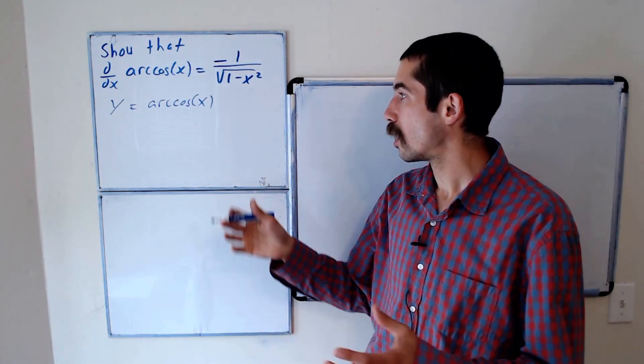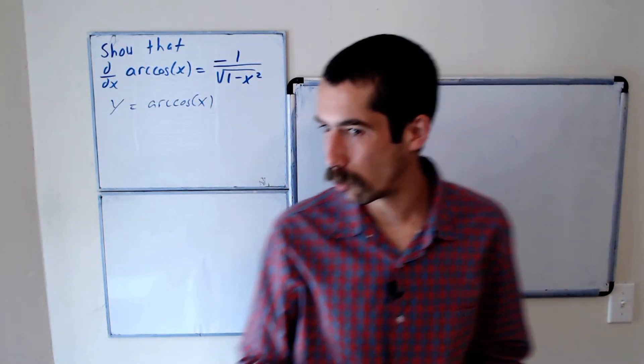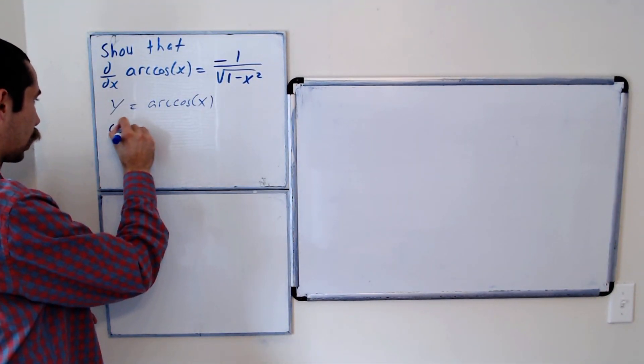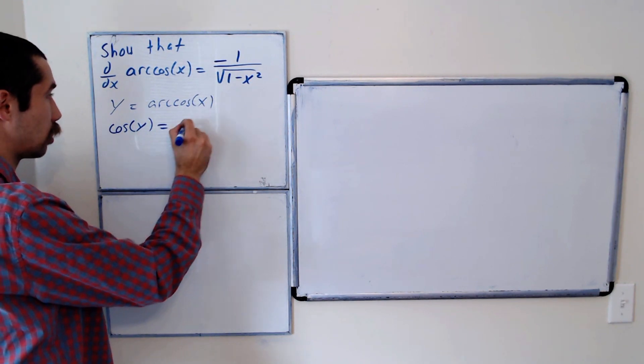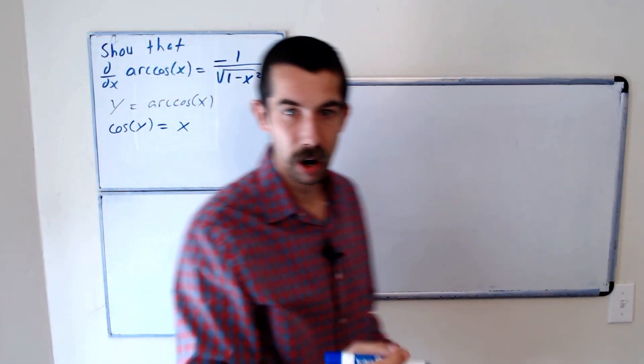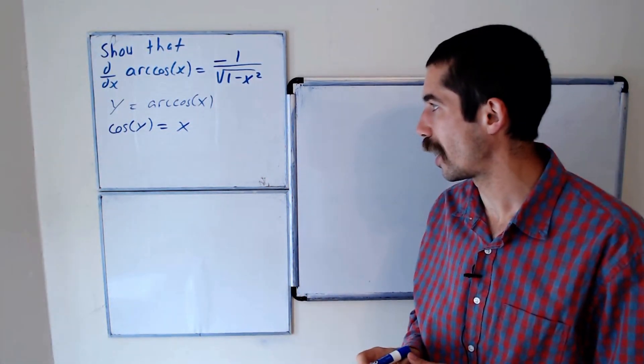So what we're going to do is evaluate the cosine of both sides. So we have cosine of y is equal to x, right? Cosine of arc cosine of x is just x.